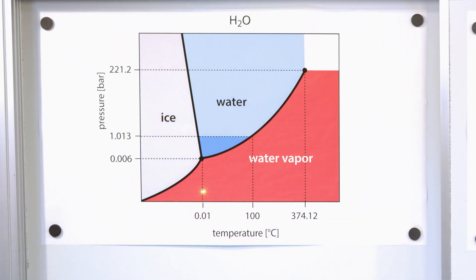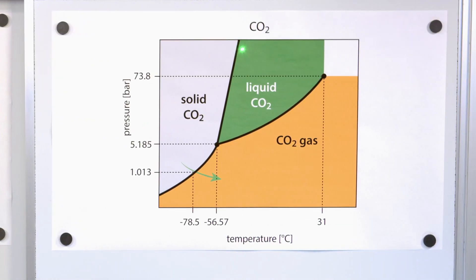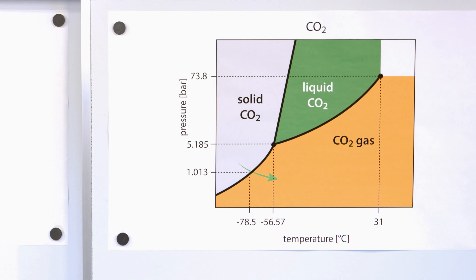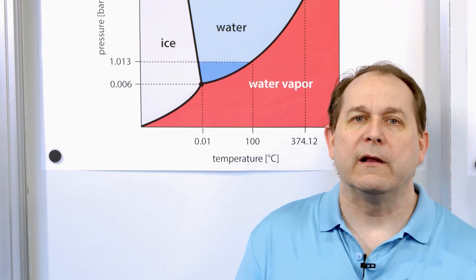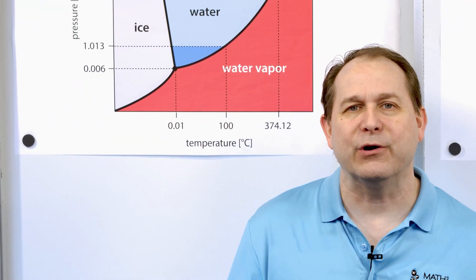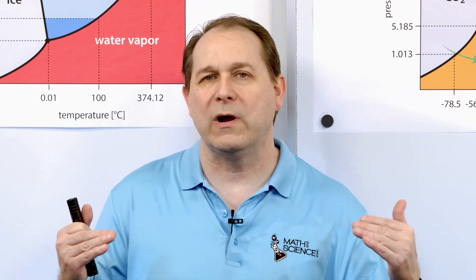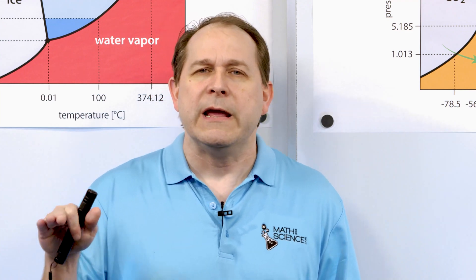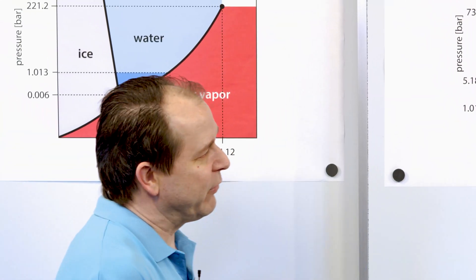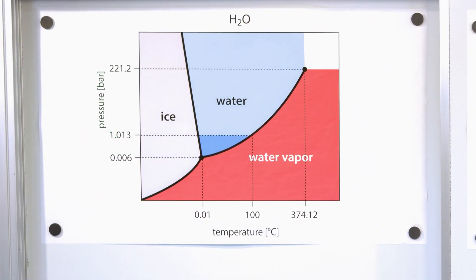Well, here's what we call a phase diagram. We have one phase diagram that describes water and we have another phase diagram that describes carbon dioxide. I also have the molecules here to show you the difference. On this axis is the pressure and on this axis is the temperature. The y-axis is in bar, and 1.01 bar is one atmosphere.